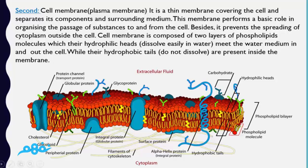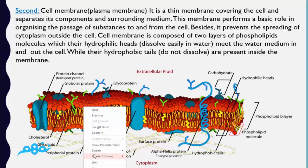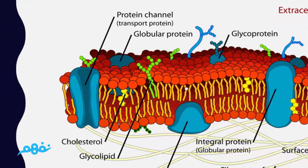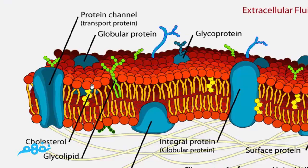The cell membrane also prevents the spreading of cytoplasm outside the cell. The cell membrane is composed of two layers of phospholipid molecules. Their hydrophilic heads, which dissolve easily in water, meet the water medium inside and outside the cell, while their hydrophobic tails, which do not dissolve in water, are present inside the membrane. As we see in this figure, these are the two phospholipid layers — the hydrophilic heads face outward and the hydrophobic tails face inward.